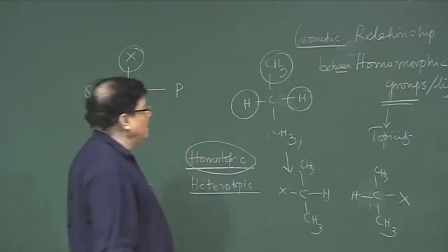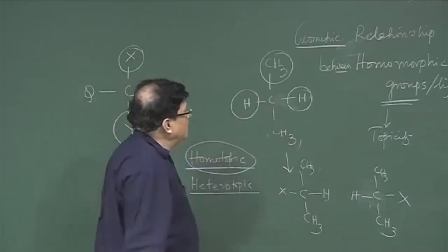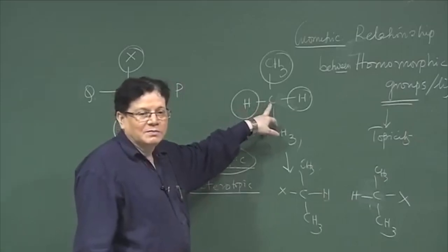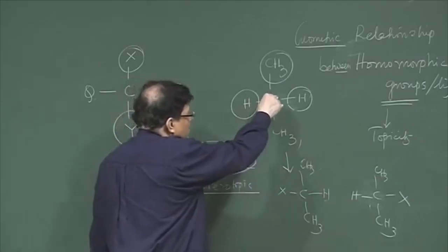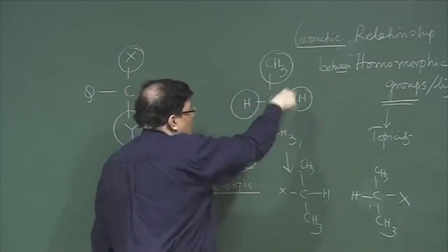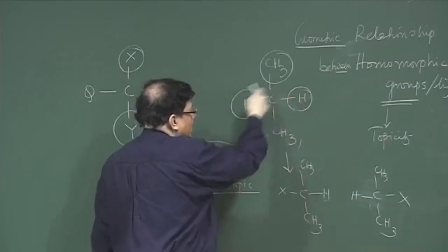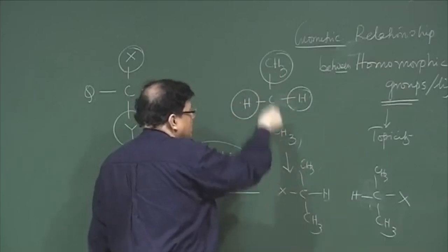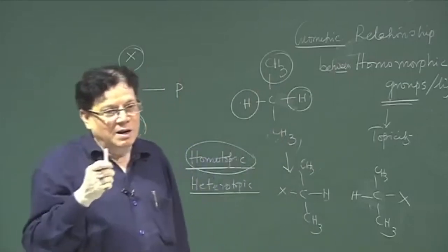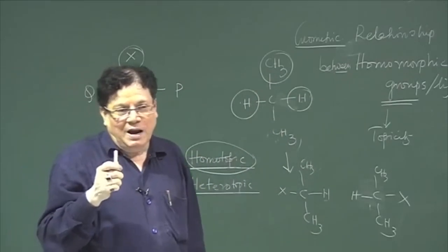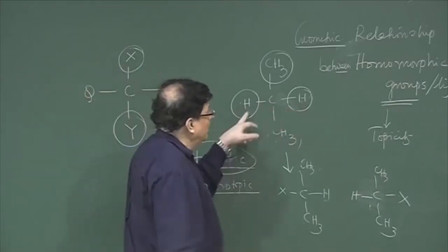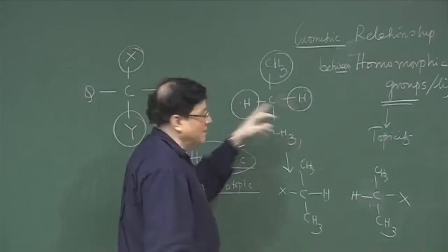To have stereoisomerism, you should have a stereogenic center. Interchange of groups does not lead to any stereoisomer, so they are the same compound. If they are the same, then the two hydrogens will be called homotopic. In symmetry terms, to find homotopic ligands, you check whether there is a Cn axis present.